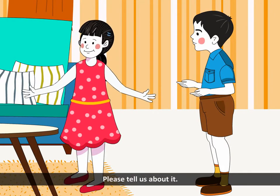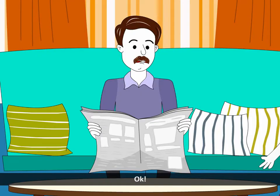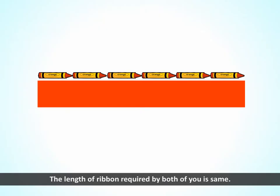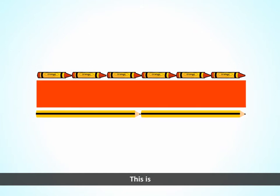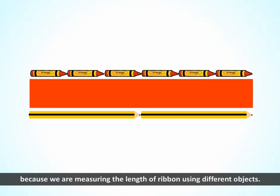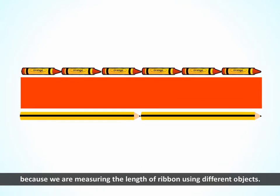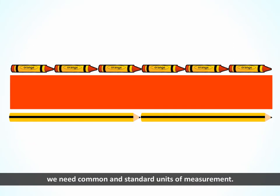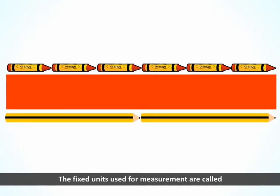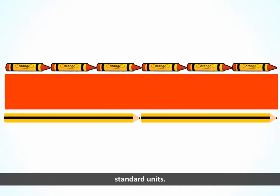Standard units? What is this, dad? Please tell us about it. The length of ribbon required by both of you is the same, but the measurement is different. Manvi, you require six crayons long ribbon, and Aarin, you require two pencils long ribbon. This is because we are measuring the length of ribbon using different objects. For uniform measurement, we need common and standard units of measurement. The fixed units used for measurement are called standard units.